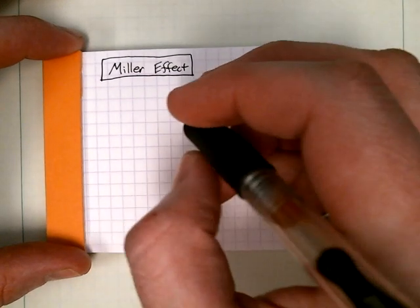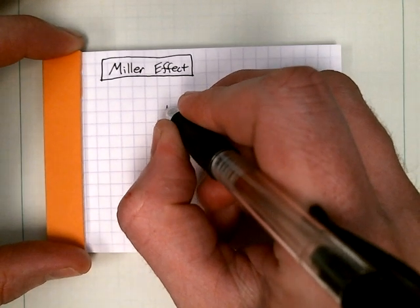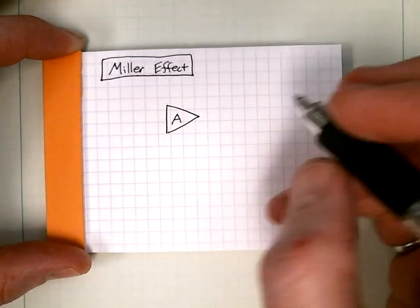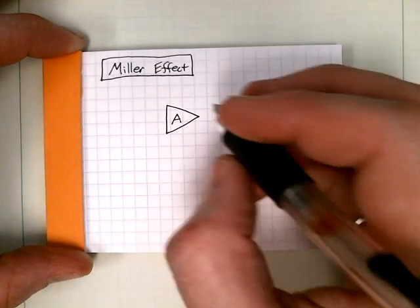So for the Miller Effect, let's say we have some amplifier, or really some relationship between nodes. It's an amplifier or relationship A.